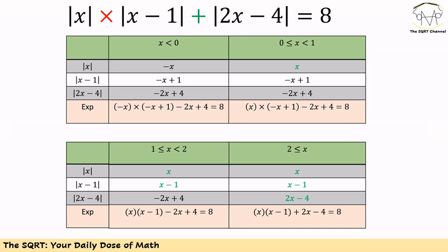Now we simplify for each region. As an example, when x < 0: |x| = -x, |x - 1| = -x + 1, and |2x - 4| = -2x + 4. Substituting, we get (-x)(-x + 1) + (-2x + 4) = 8.